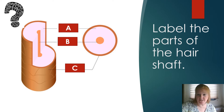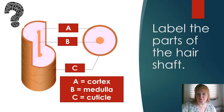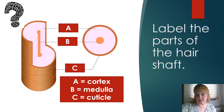Reviewing the parts of the hair shaft — A is the cortex, outside of the medulla. B is the medulla in the center. And C, the cuticle, is the outer layer.